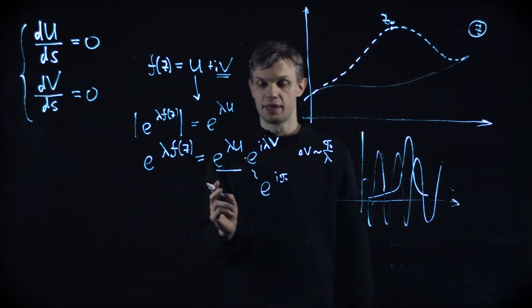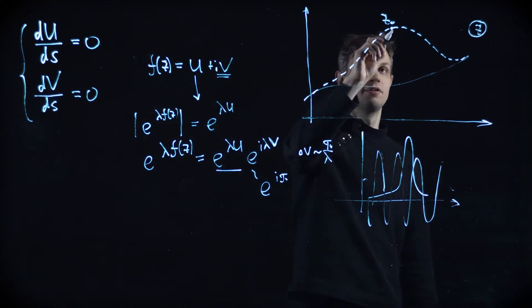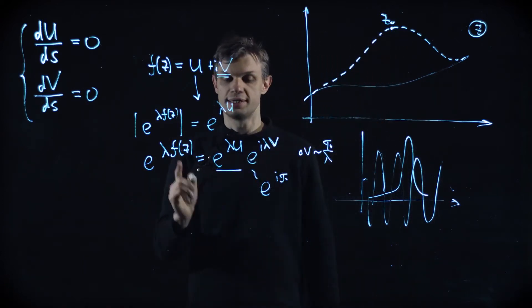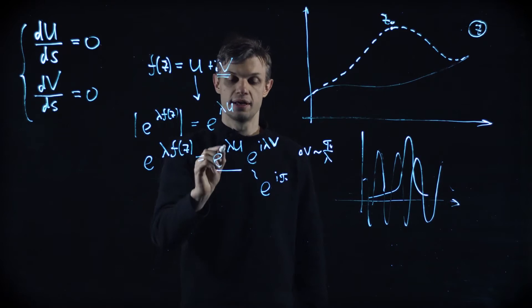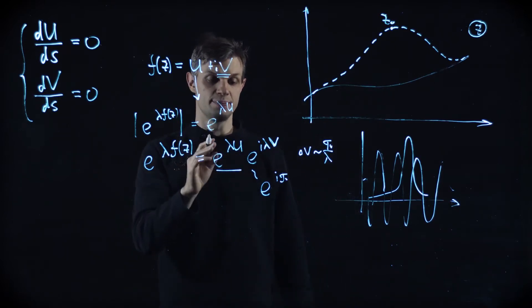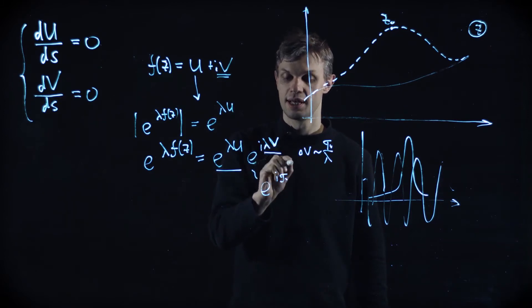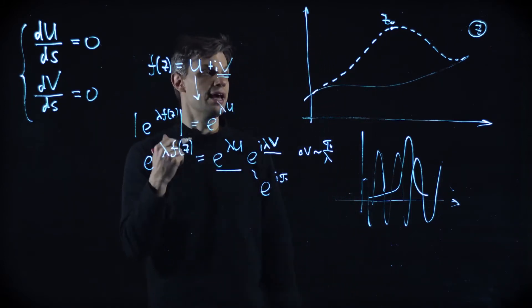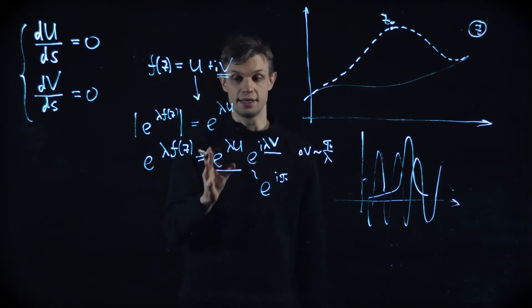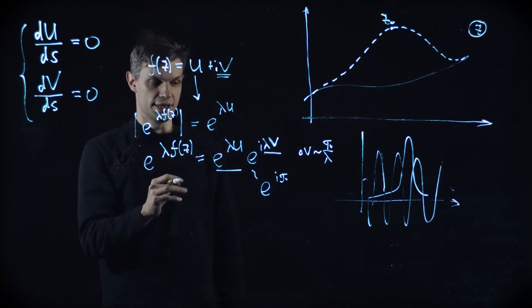What may happen is that we still have a sharp peak contribution from the u function, but in the same region the v function may oscillate and change sign quite fast, basically killing the contribution from the real part. So this should be avoided, which means these two conditions actually complement each other.